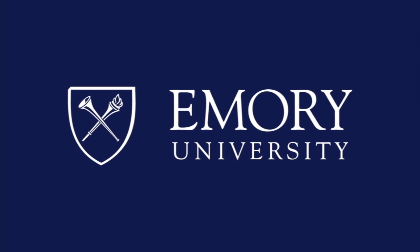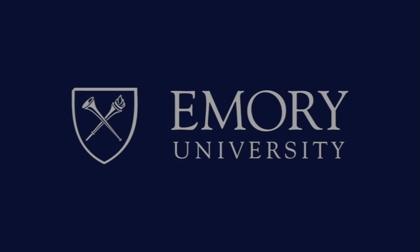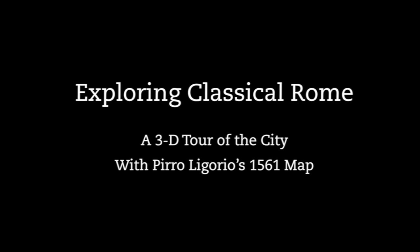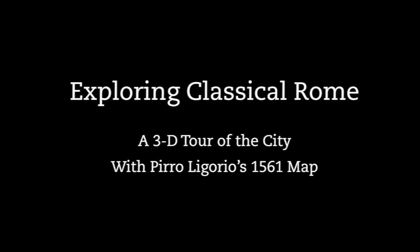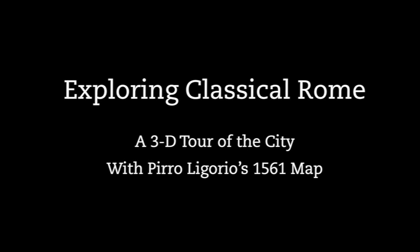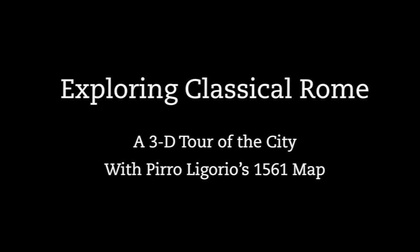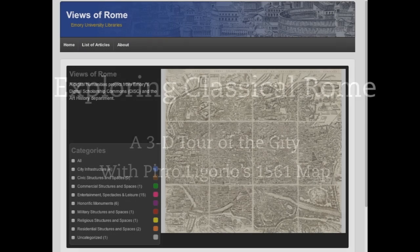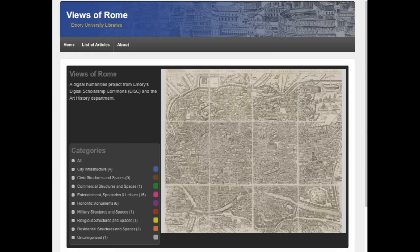This program is brought to you by Emory University. Views of Rome is a project that draws on the expertise of faculty in the Art History Department, Collections and MARBL, the research of graduate and undergraduate students, and the work of DISC team members and librarians.